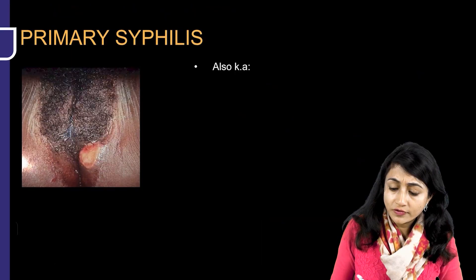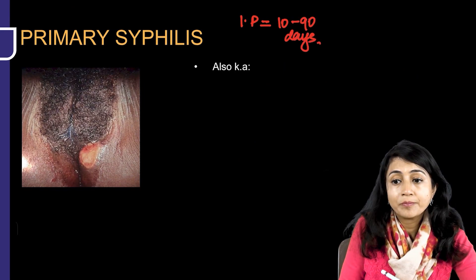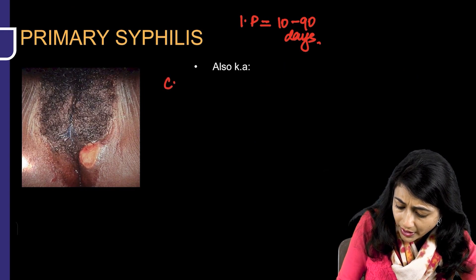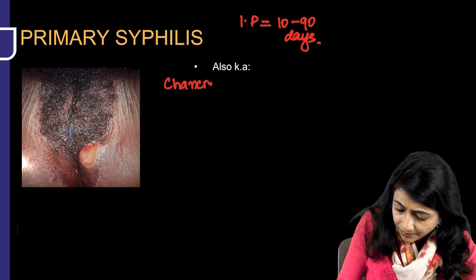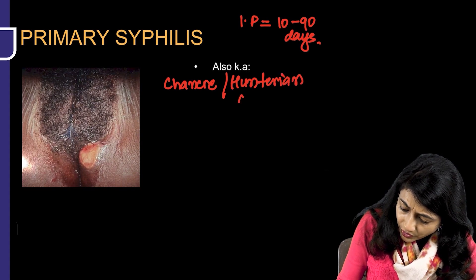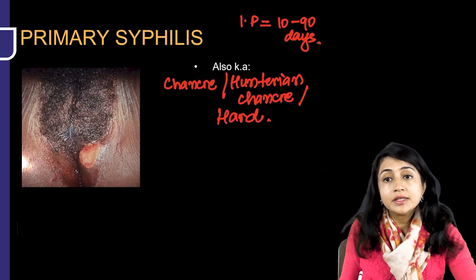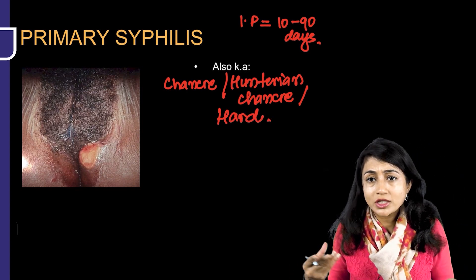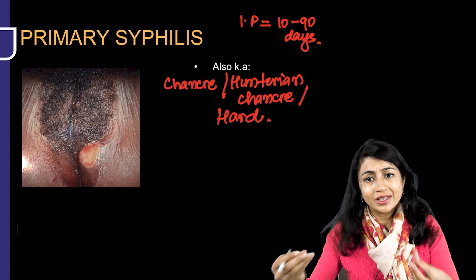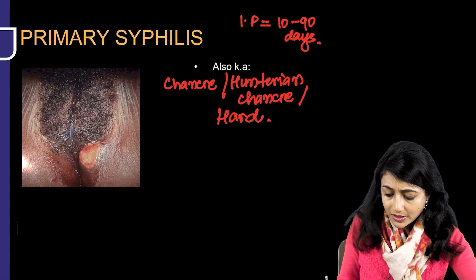Here's the explanation. The primary stage of syphilis occurs after an incubation period of 10 to 90 days. This stage is called a chancre — also called Hunterian chancre or hard chancre. It is transmitted through the genital route, so you get an ulcer in the genital area.